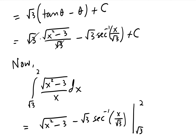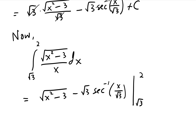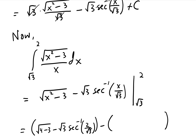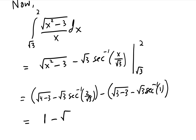Applying the bounds from √3 to 2: At x=2: √(4−3) − √3·sec⁻¹(2/√3) = 1 − √3·(π/6). At x=√3: √(3−3) − √3·sec⁻¹(1) = 0 − √3·0 = 0. The final answer is 1 − √3·π/6.